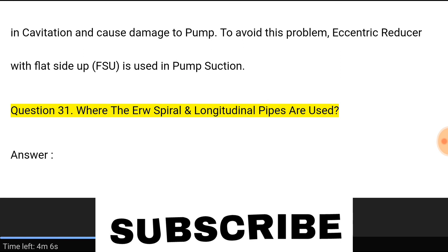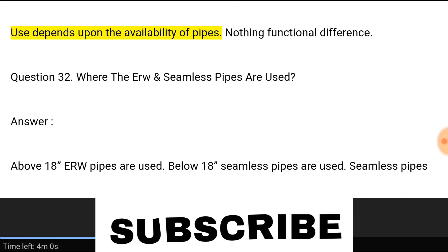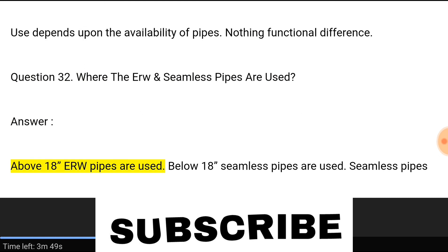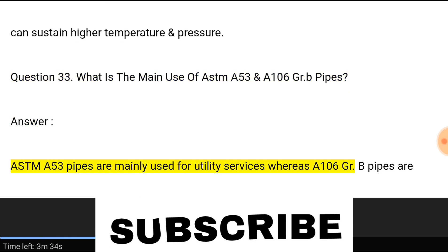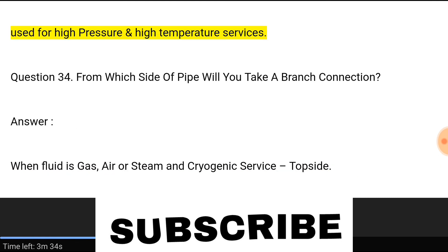Question 31: Where are ERW spiral and longitudinal pipes used? Answer: Their use depends upon the availability of pipes; there is no functional difference. Question 32: Where are ERW and seamless pipes used? Answer: Above 18 inches, ERW pipes are used. Below 18 inches, seamless pipes are used. Seamless pipes can sustain higher temperature and pressure.